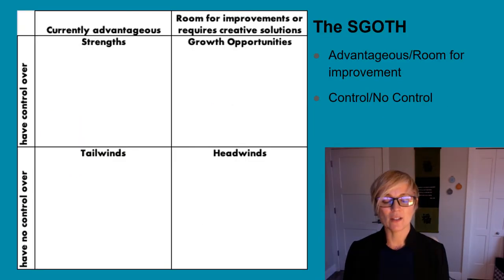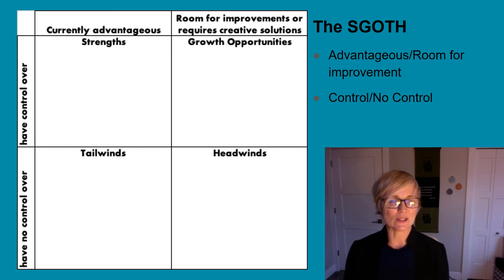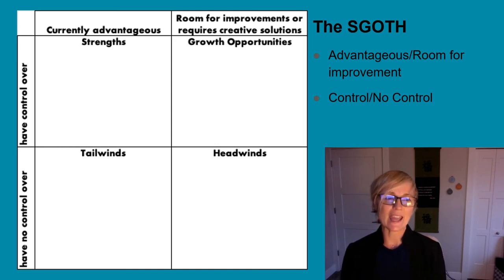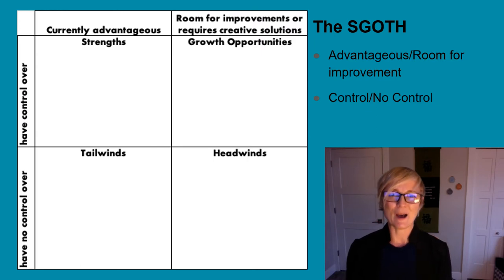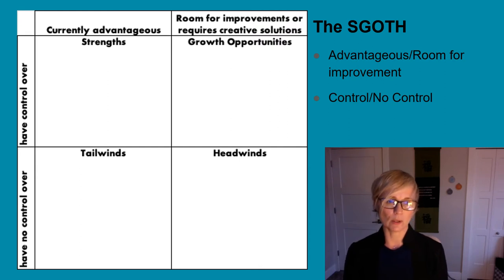The SCOTH, which stands for Strengths, Growth Opportunities, Tailwinds, and Headwinds, is a two-by-two matrix. It is an intersection of things that are advantageous, or things that have room for improvement or could require some kind of creative solution, and whether or not you as a founder have control over those things — situations, attributes, skills, or general places you might find yourself.